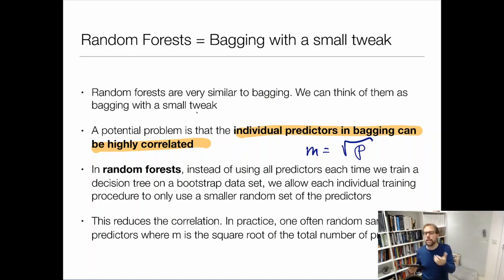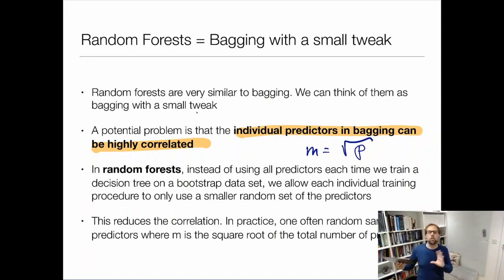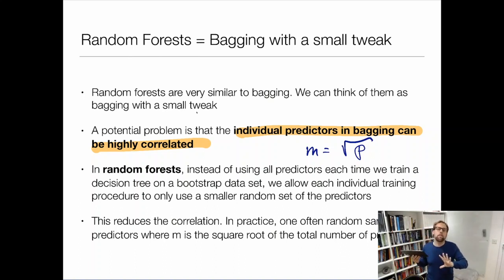In practice it will be more variables — maybe originally I have 100 predictor variables and now I only use 10 in the reduced case. By using only 10, I make sure I'm not always using the same ones, which makes the trees more different from each other and helps bring the variance down.